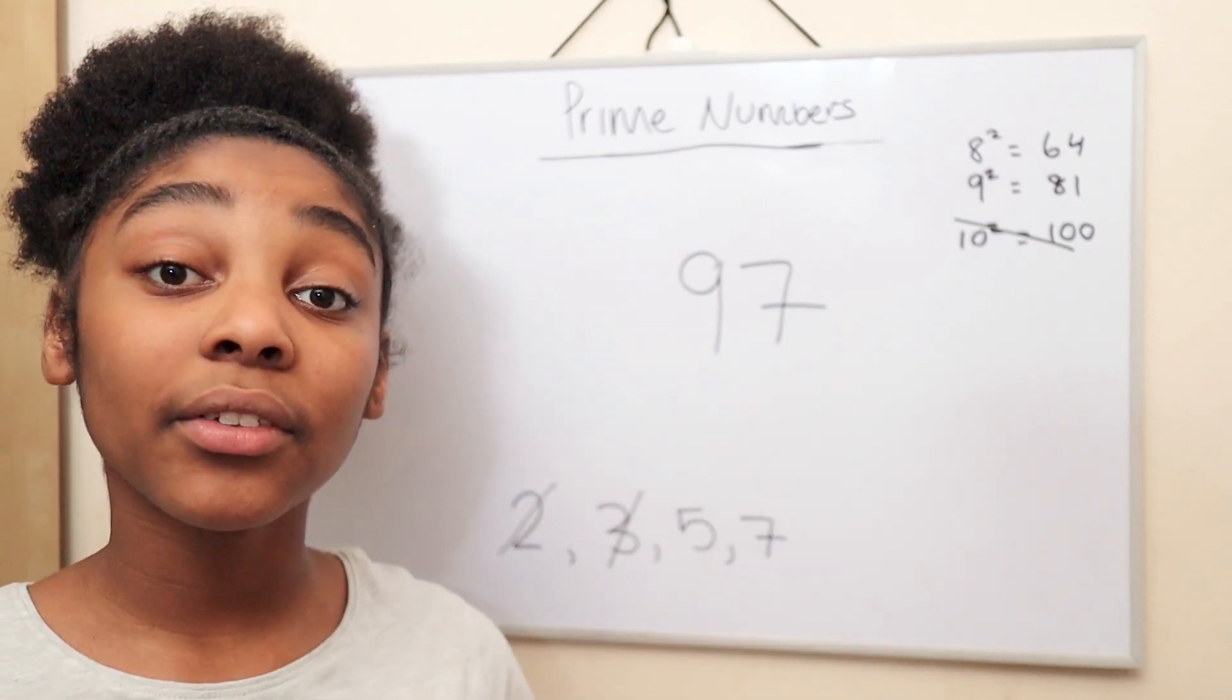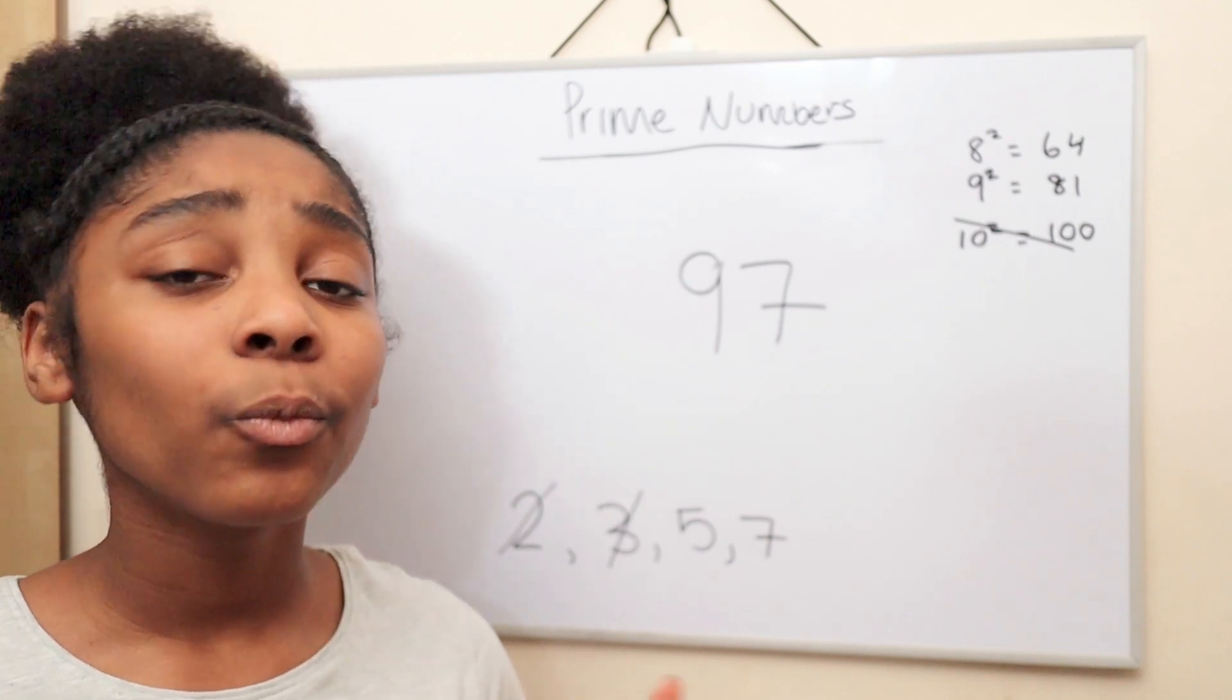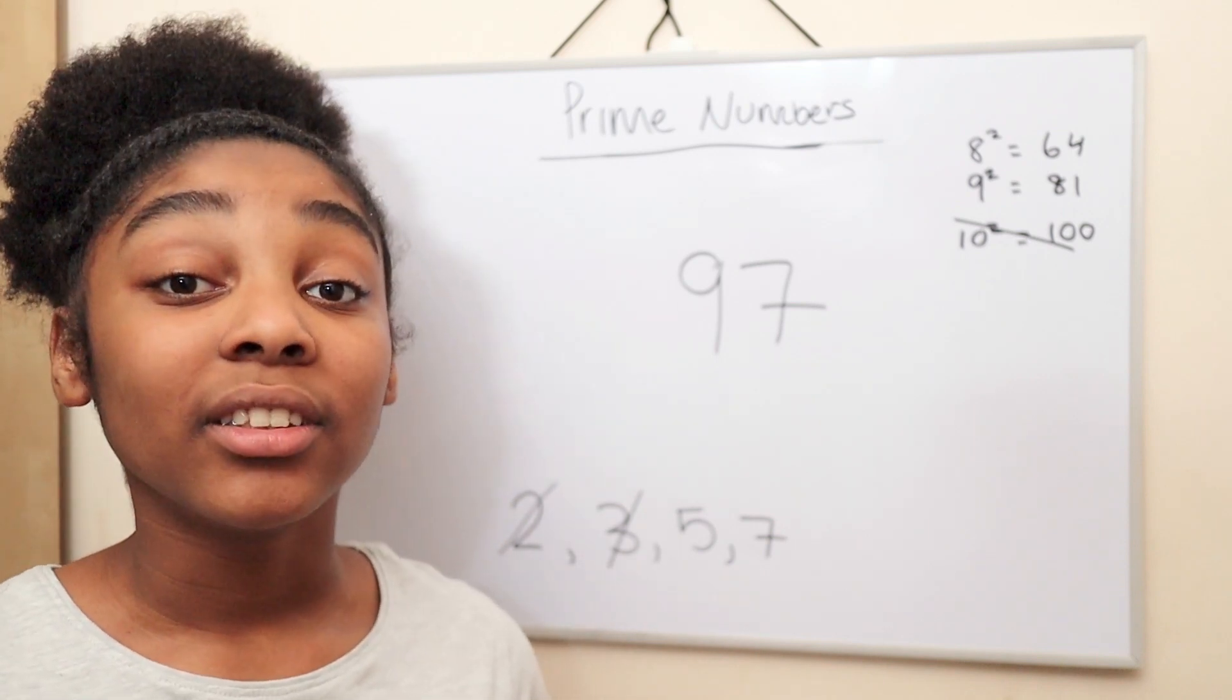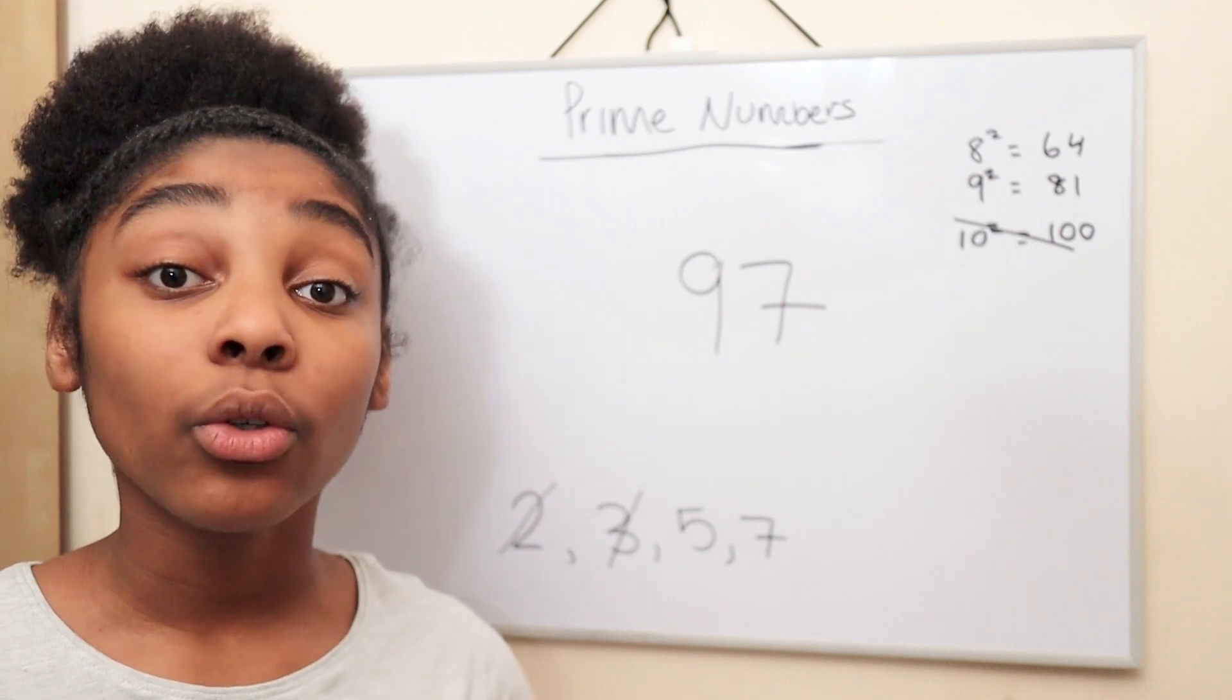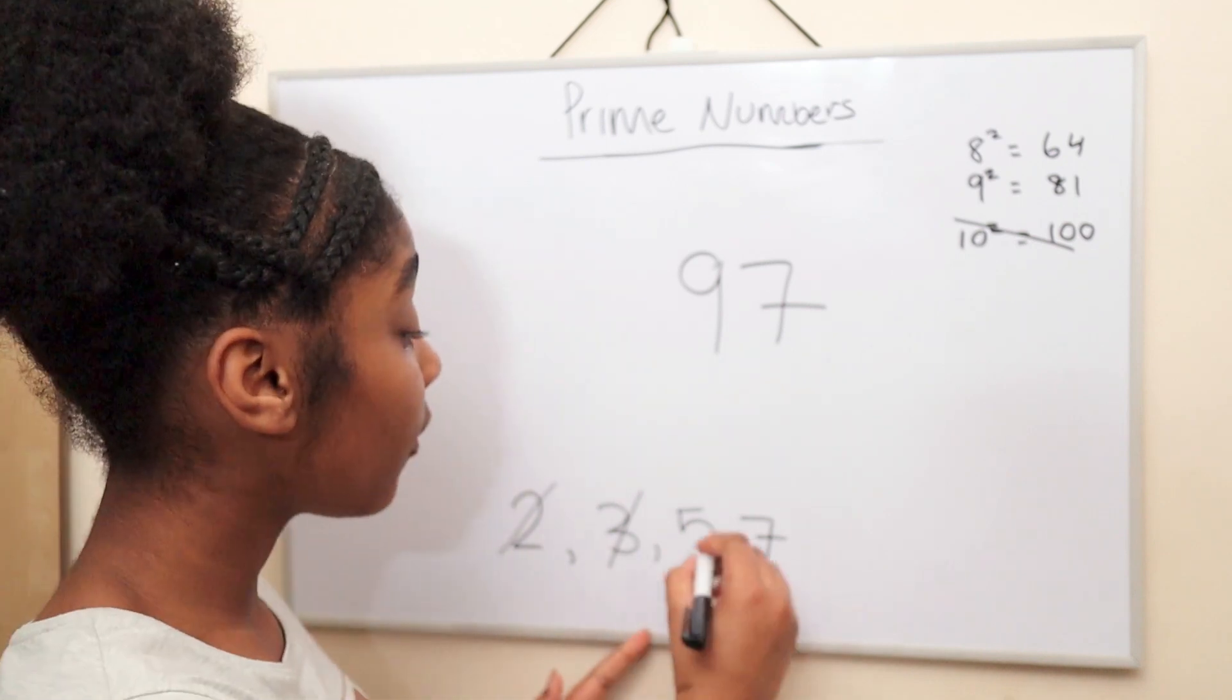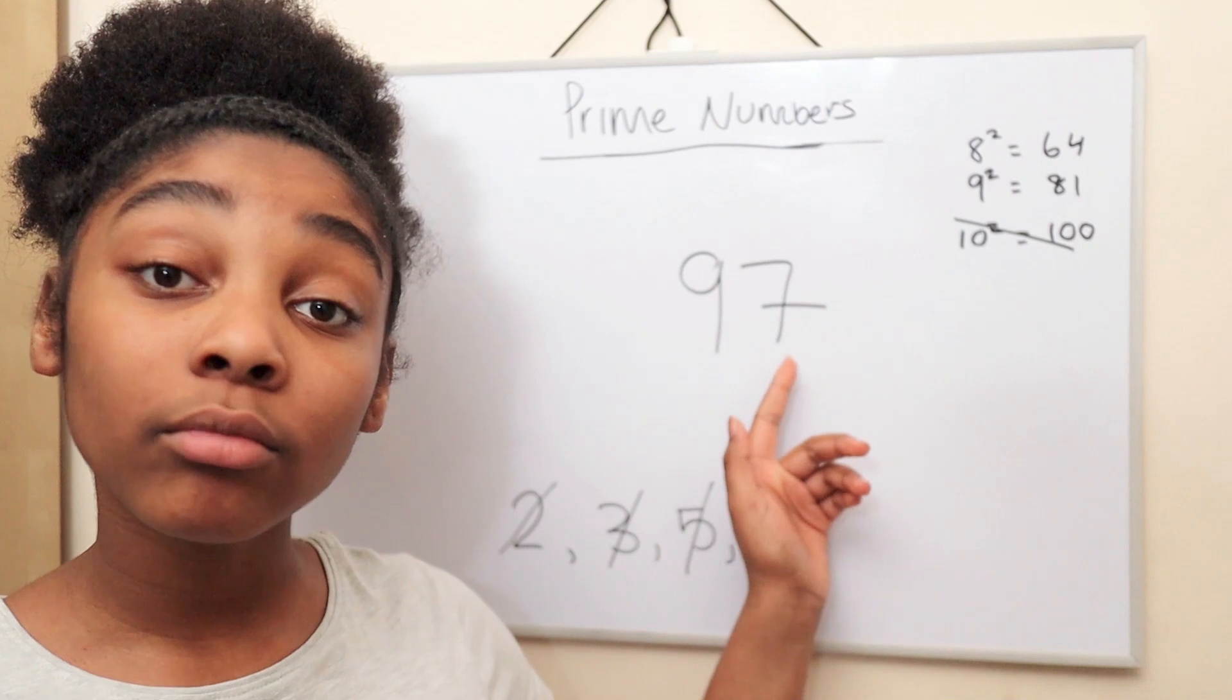Can 5 go into 97? No. Why? Because 97 doesn't end in either a 0 or a 5. So we can cross out 5.